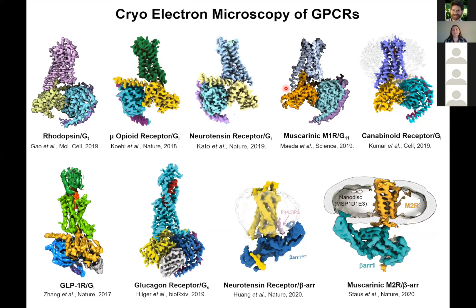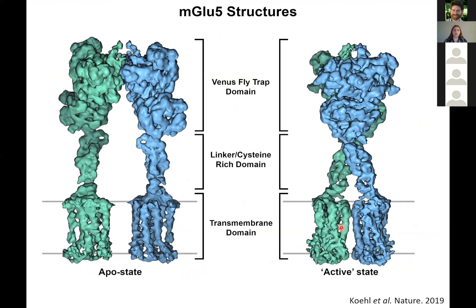The lab has worked on a number of G-protein-coupled receptors, primarily of the class A family, some of the class B family, bound to their respective G-proteins, as well as class A receptors bound to beta-arrestin, which is a protein involved in down-regulation of GPCRs. And then recently, last year, in collaboration with the Kobilka lab, our lab was able to determine the structure of an apo state and active state class C receptor of mGluR5.